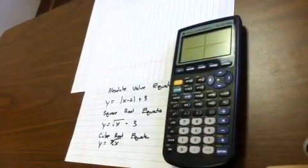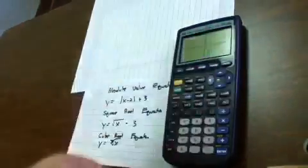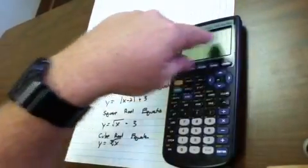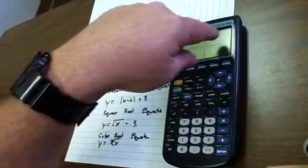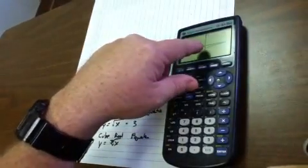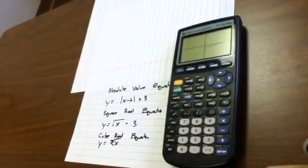Now notice this graph. The coverage of this graph, most of it's in quadrant 3, actually goes into quadrant 4, and it goes into quadrant 1. But notice, the only coverage along the x-axis is in the positive side. So here's an example where our domain is restricted. Our domain is going to be everything greater than or equal to 0.